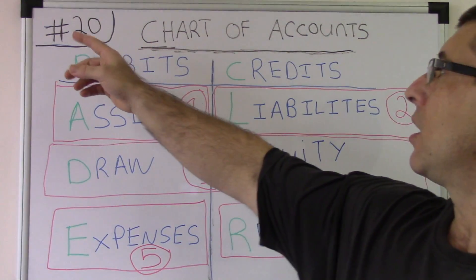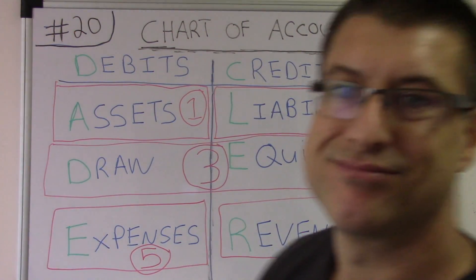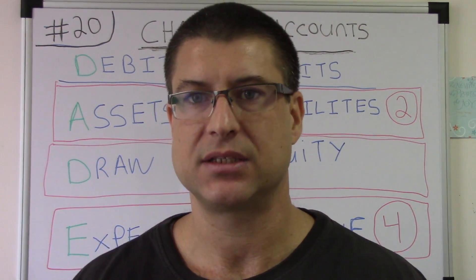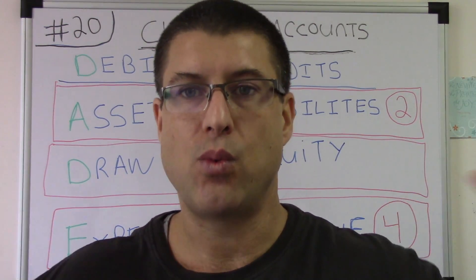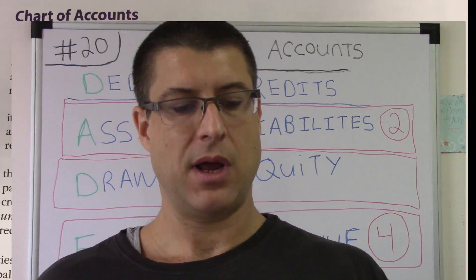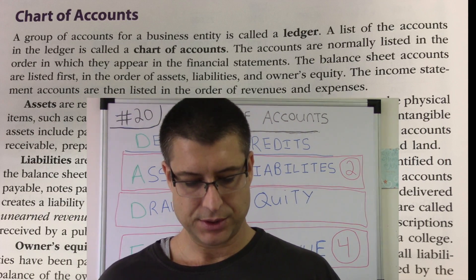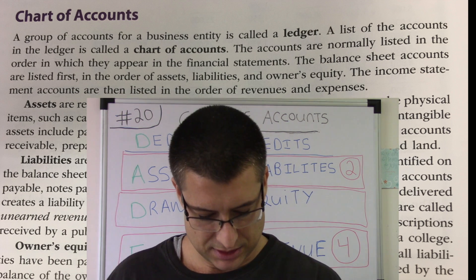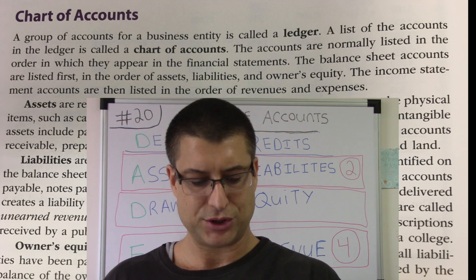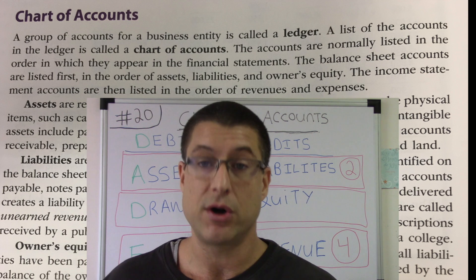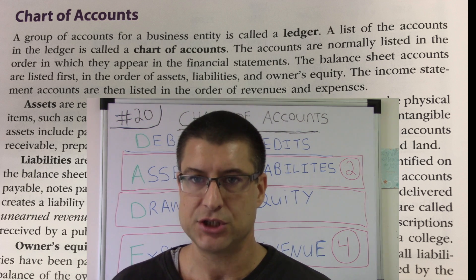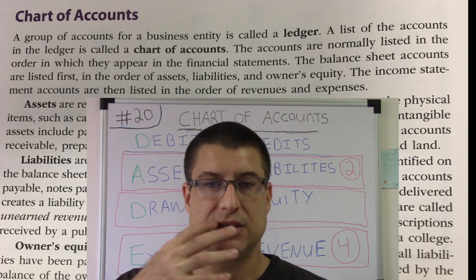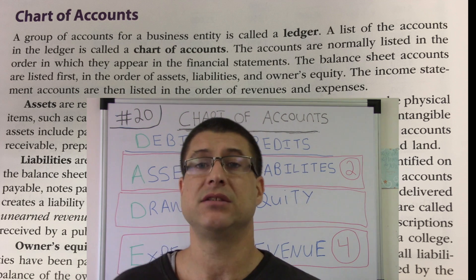This one here is Accounting for Beginners number 20 — chart of accounts. This is something so basic it just has to be done. You've got to know the basics before you can move on. Let's start with what the book says: a group of accounts for a business entity is called a ledger. A list of the accounts in the ledger is called the chart of accounts. I would just think of it as a list of accounts, personally.